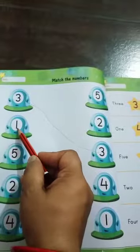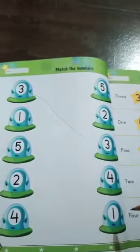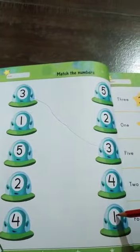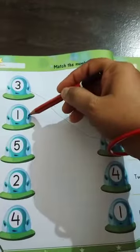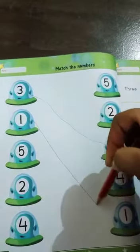Now again look here, this is number 1. Now find out where is number 1? This is number 1. Now again draw a slanting line to match number 1.